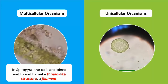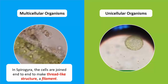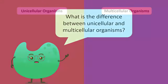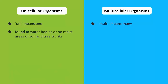However, most unicellular organisms are microscopic. Sometimes they live in a colony, which is why we can see them without a microscope. Unicellular organisms are usually found in water bodies such as ponds, lakes, rivers, or the sea, or on moist areas of soil and tree trunks.